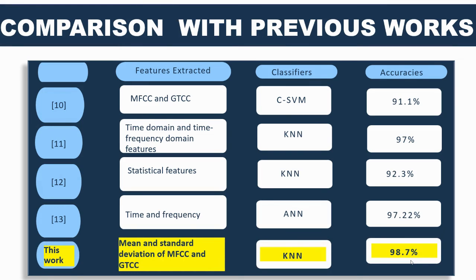We have also conducted a comparison with previous works. In study [10], MFCC and GTCC features were extracted and a CNN classifier achieved an accuracy of 91.1%. In study [11], time domain and frequency domain features were extracted and a KNN classifier achieved 97%. In study [12], statistical features were extracted and KNN achieved 92.3%. In study [13], time and frequency domain features with an ANN classifier achieved 97.22%. In this work, we extracted the mean and standard deviation of MFCC and GTCC features with a KNN classifier and achieved an accuracy of 98.7%.